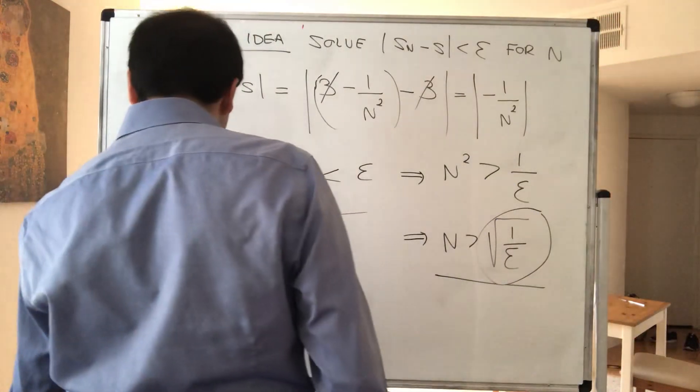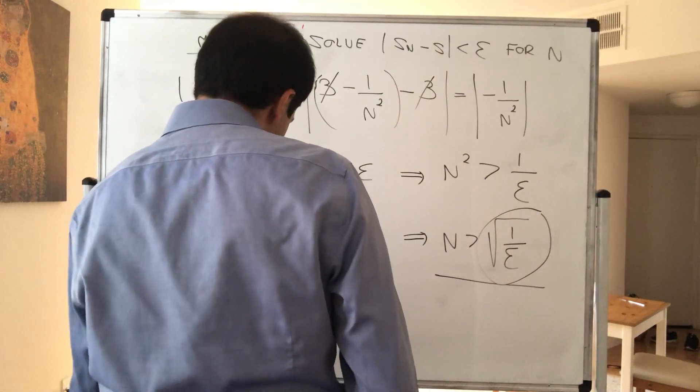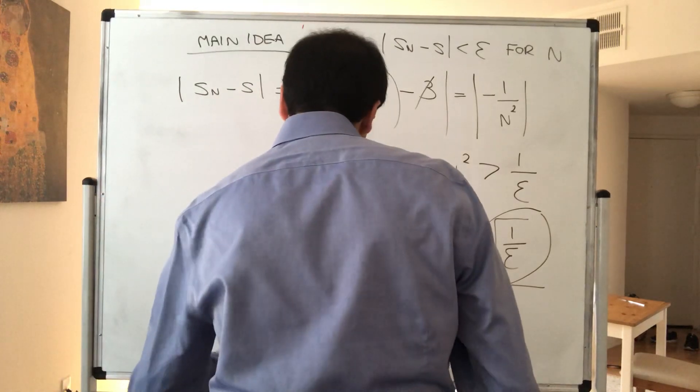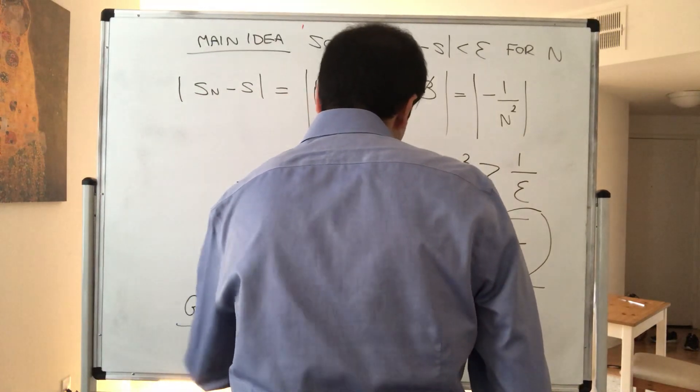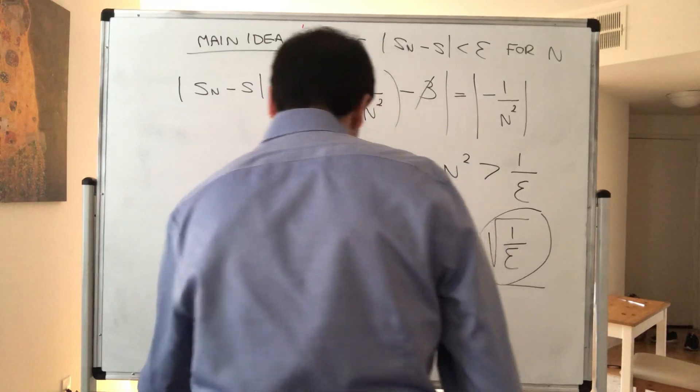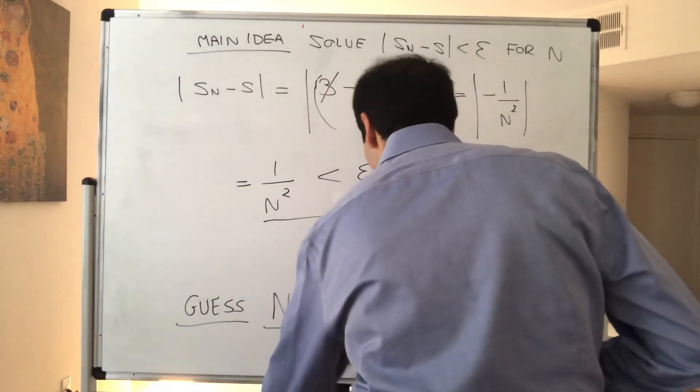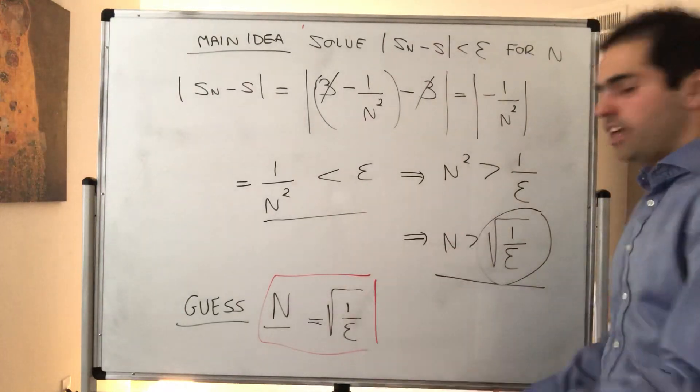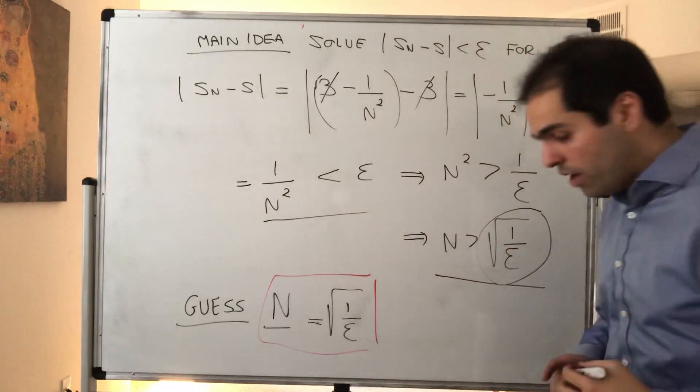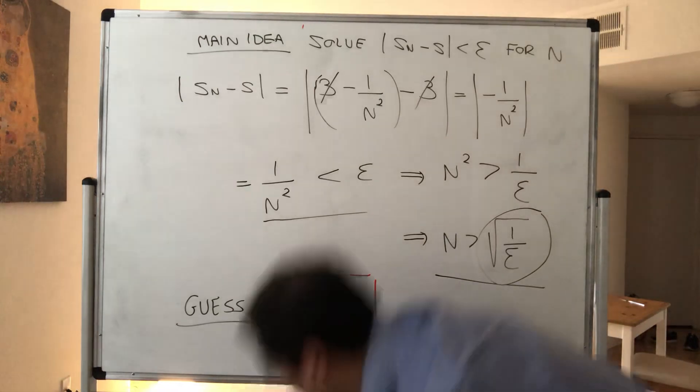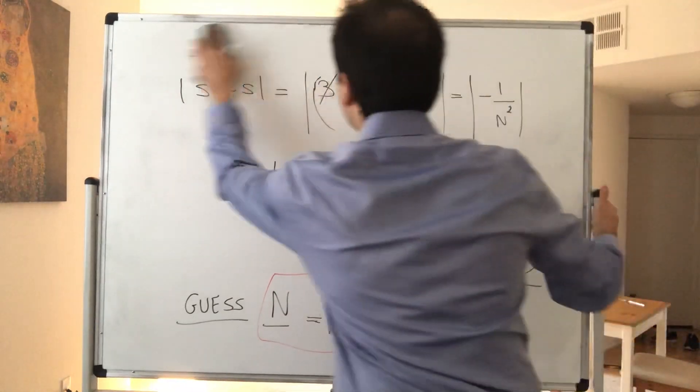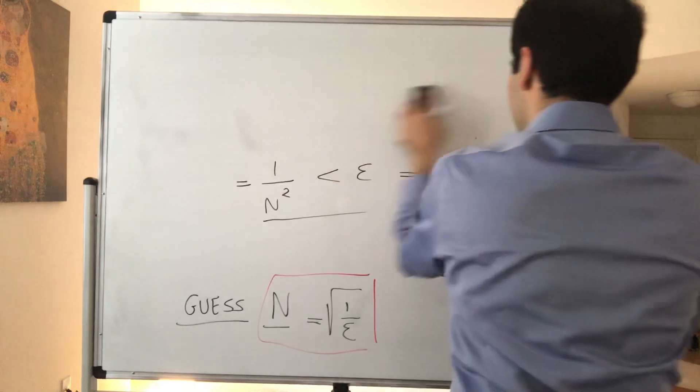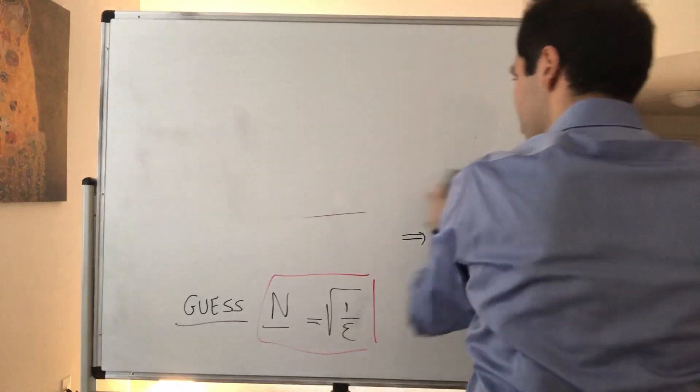Okay, and in particular notice, this suggests to let capital N to be square root of 1 over epsilon. So in other words, our guess is that capital N is just square root of 1 over epsilon. And our goal is to show that this guess works. And again, that's just scratch work. Now we want to do the actual work. So, actual proof.